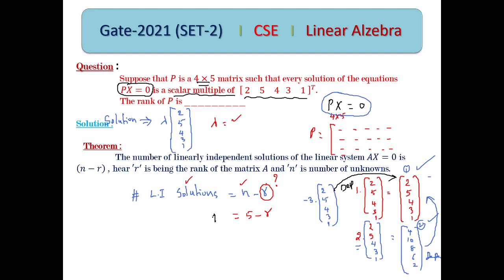The number of linearly independent solutions is 1, and the number of unknowns n is 5. Using the theorem: 1 = n − r = 5 − r, so r = 4. Therefore the rank of the coefficient matrix P is 4.